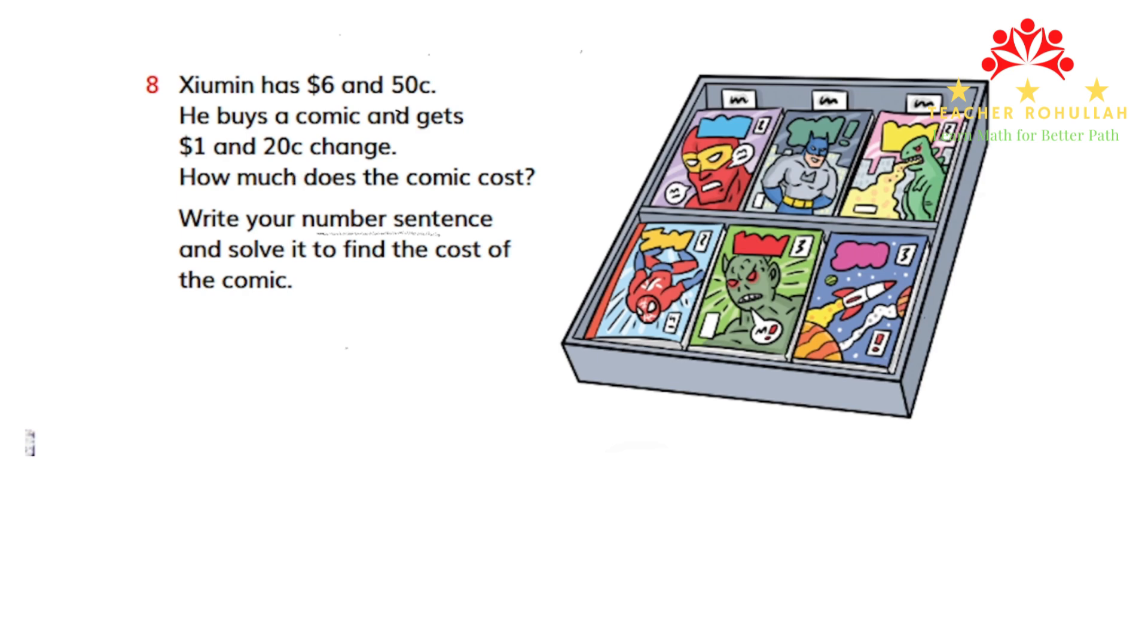We can write amounts of money using dollars and cents or decimal points. To write the number sentence, we'll use decimal points. To write six dollars and fifty cents, we write the dollar sign, six point fifty, without the cent sign. So six dollars and fifty cents minus an amount, which...